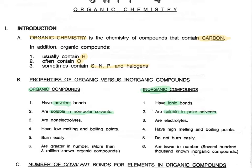Since organic compounds are molecular, they are also non-electrolytes, whereas the ionic inorganic compounds that do dissolve are likely to be strong electrolytes. Inorganic compounds tend to have very low melting and boiling points — what we mean by low melting and boiling points is below 500 degrees Celsius — whereas inorganic compounds have melting points that are much higher, in the 3,000 to 5,000 degrees Celsius range.